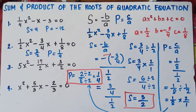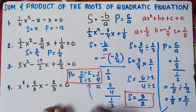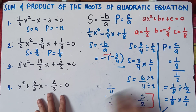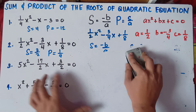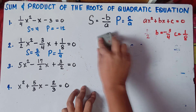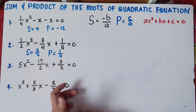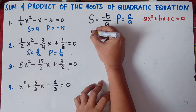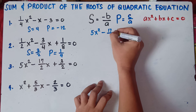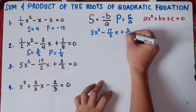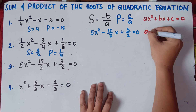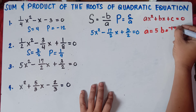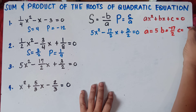Let's try number 3 — pause the video while I erase. Number 3 has a large fraction: 5x² − (17/2)x + 3/2 = 0. Our a beside x² is 5, our b is negative 17/2, and our c is 3/2.